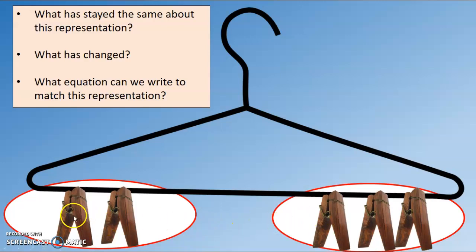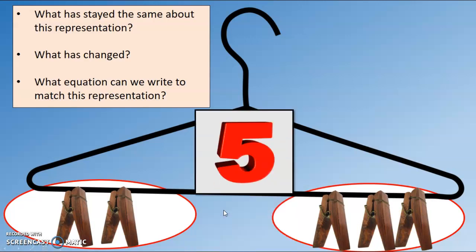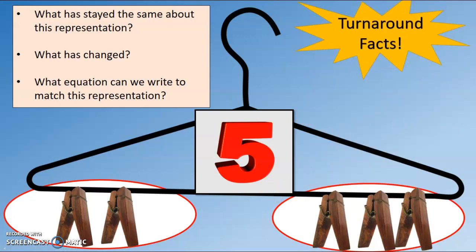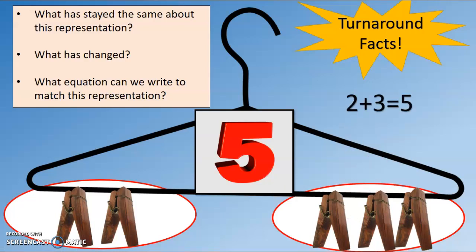I still have one, two, three, four, five total clothespins. So what equation could I use to represent this picture? What addition fact could I write? Tell your home teacher. Are you telling your home teacher two plus three equals five? That's a little bit different than the one before because this is the turnaround fact. We turned it around — we still have five, we still have the same number in each group, they're just in a different order. Two plus three equals five. Good job.